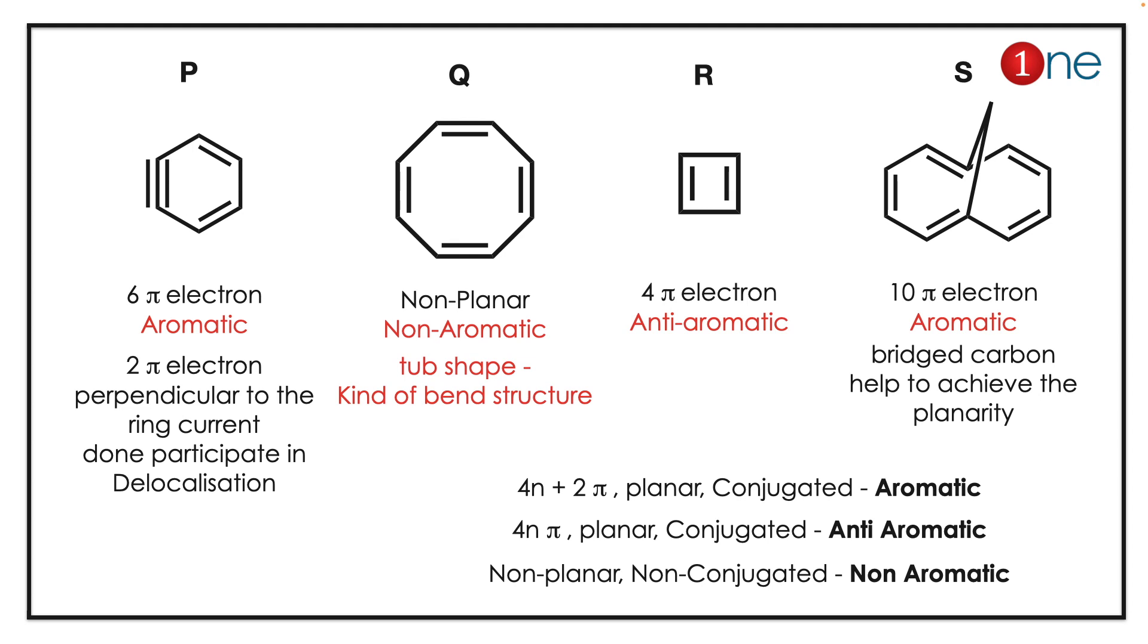Let us eliminate R and S. R is anti-aromatic because it's planar with 4 pi electrons. If you look at S, it has a bridged carbon. It's an aromatic system because it has 10 pi electrons - a 4n + 2 system. So our answer is Q because of its tub shape.